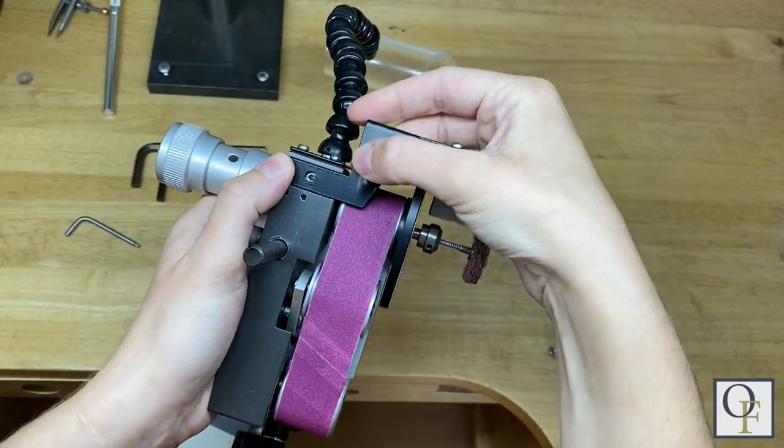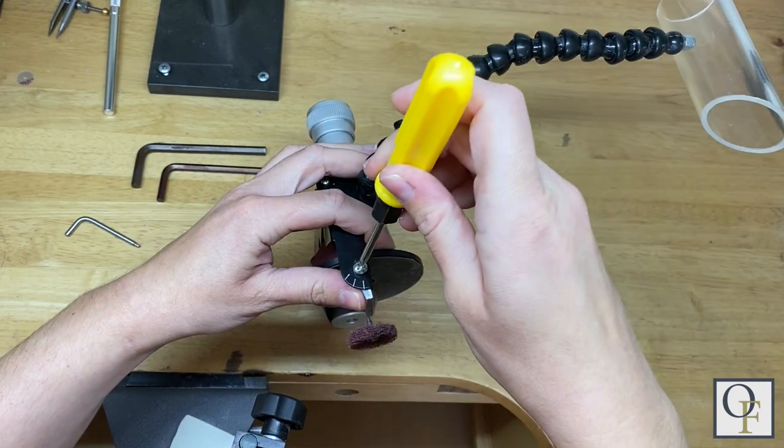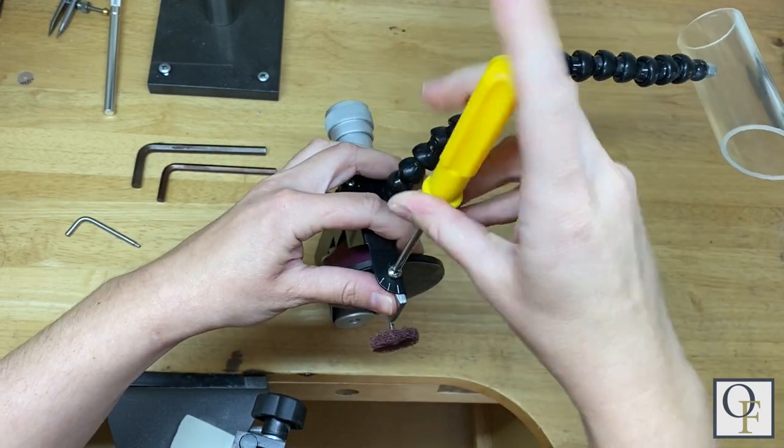Next we're going to take the hand rest and screw it to the back of the sander. Choose your desired angle and tighten the side screw.